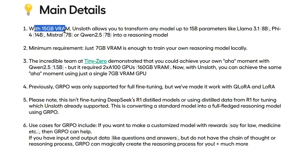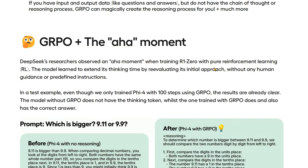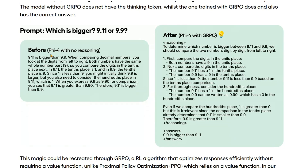Using Unsloth you can transform any model within 15 GB VRAM and turn models like LLaMA 3.1 8B, Phi-4 14B, Mistral 7B, or Qwen 2.5 7B into a reasoning model. It's not a distillation process - rather it is converting a normal model into a thinking model using reinforcement learning, specifically GRPO.